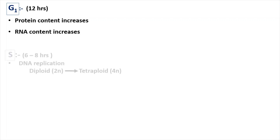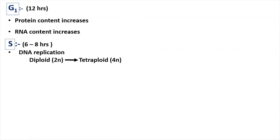The next phase is the Synthesis phase. This is the phase where DNA replication occurs. DNA replication means the number of chromosomes inside the cell doubles — in other words, the diploid cell becomes a tetraploid cell. A diploid cell has two sets of chromosomes and a tetraploid has four. Taking a human cell as an example, it has 46 chromosomes, and during the Synthesis phase these 46 chromosomes become 92.